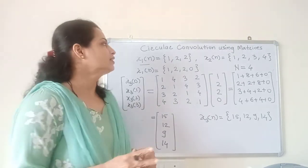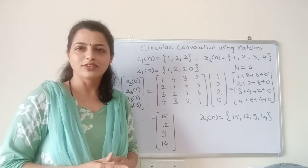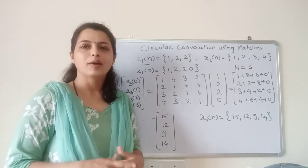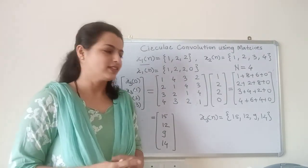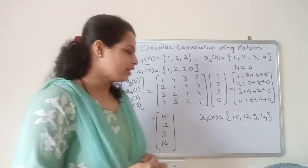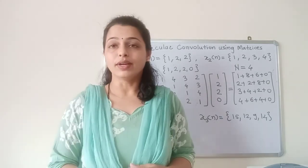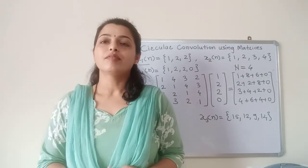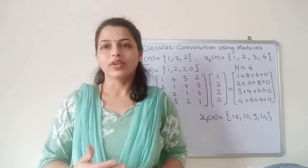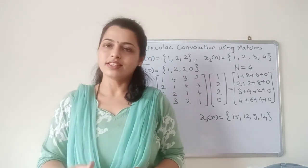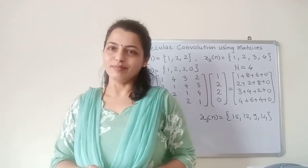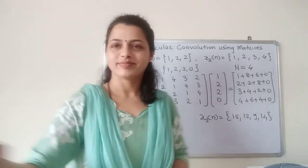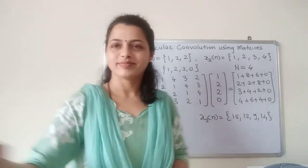So this is how we find circular convolution using matrices. We perform matrix multiplication, which is why the answer comes very fast and this is a very easy method.